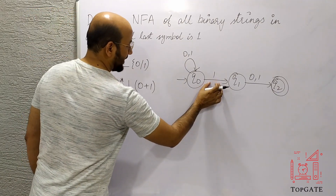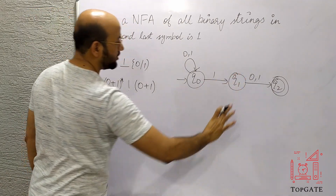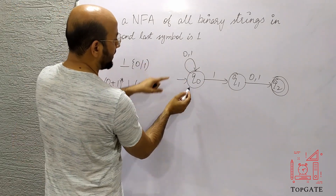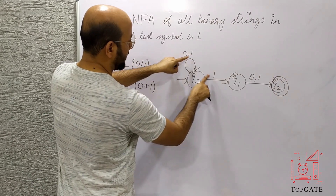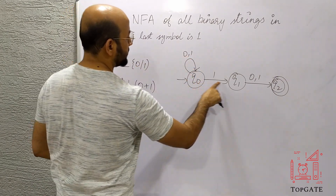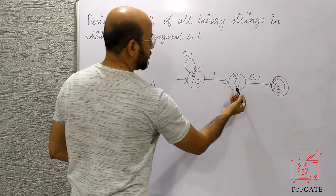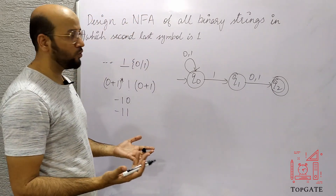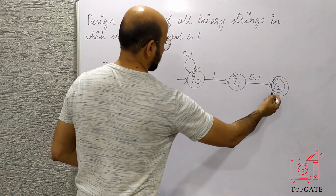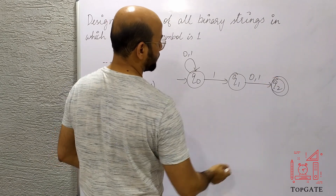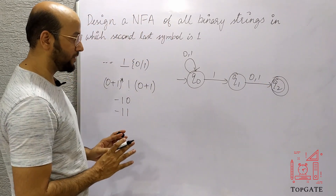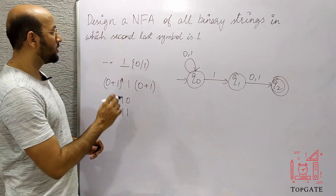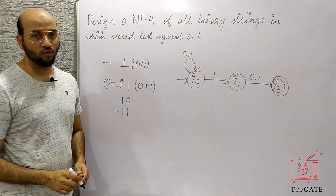The second last character is here and the last character is here. On q0 there is a path for 0 and two paths for 1 — one self-loop and one going to q1. On q1 there are two paths: one for 0 and one for 1. But on q2 there is no outgoing path at all, which is allowed in NFA but not in DFA. So this is your NFA for strings in which the second last symbol is 1.